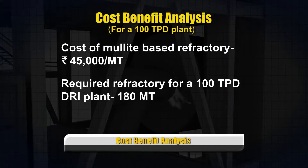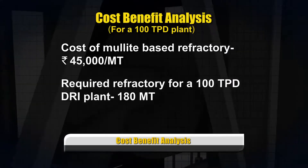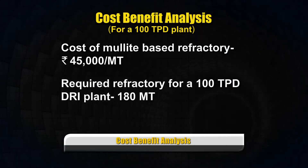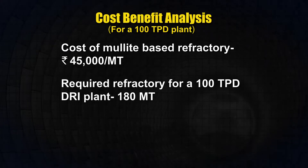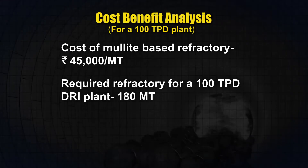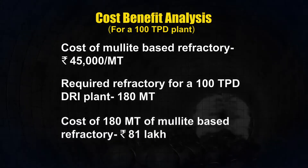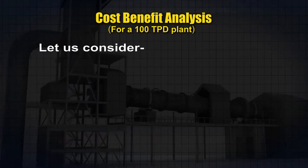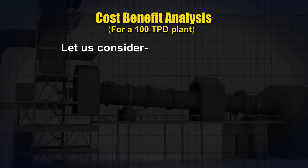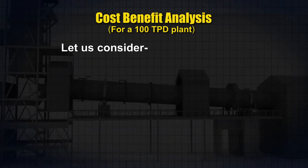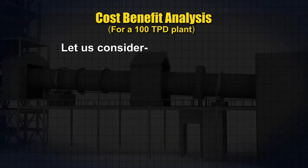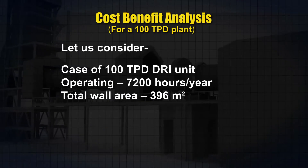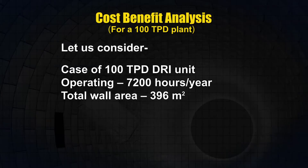For a 100 TPD DRI plant, 180 metric tons of mullite based refractory is required, which works out to be 81 lakh rupees. Let us consider the case of a typical 100 TPD DRI unit operating for 7,200 hours per year.